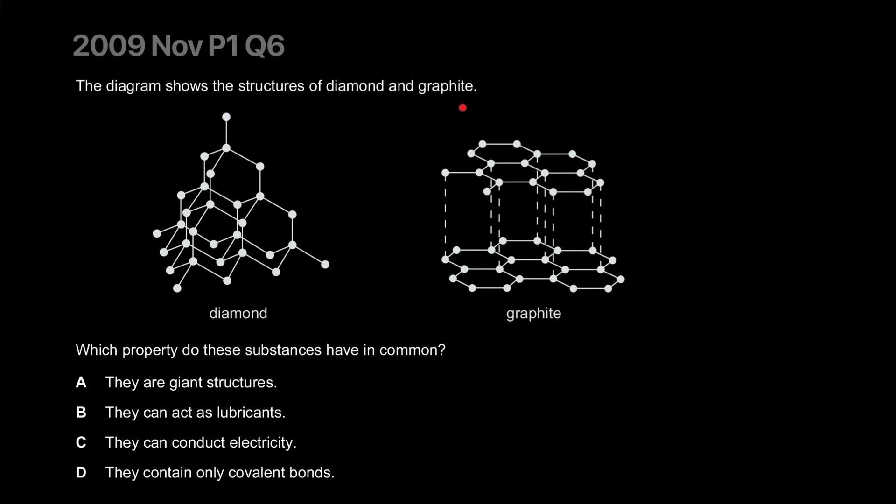The diagram shows the structure of diamond and graphite. Which property do these substances have in common? They are giant structures - yeah, sure. They can act as lubricants - that's out. They can conduct electricity - no, diamond cannot. They contain only covalent bonds - that is indeed true. Yeah, not the best question, I guess. The correct answer is A.